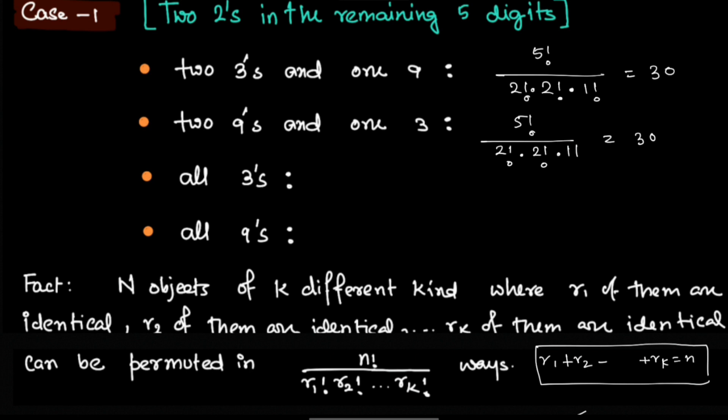And now if all of them are 3s, meaning all the remaining digits are 3, then there are 2 more 2s there. So there will be 5 factorial over 2 factorial because of 2 identical 2s and 3 factorial. If we calculate that number, it will be evaluated as 10. And similarly when all the remaining 3 numbers are 9s, it will be 10 as well.